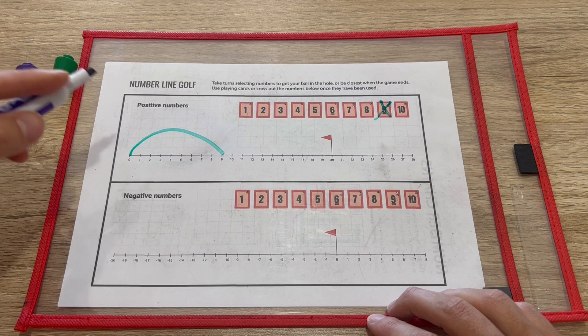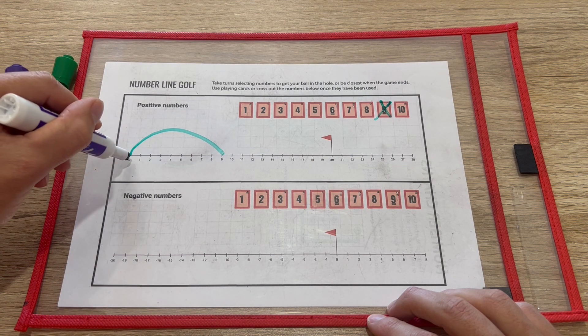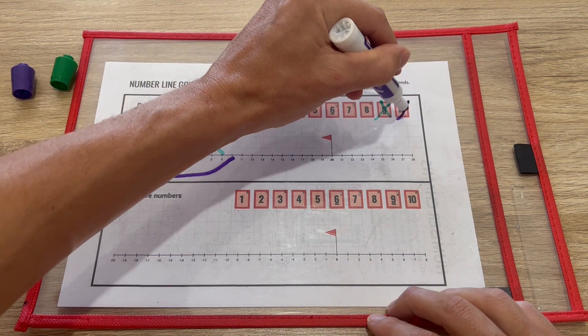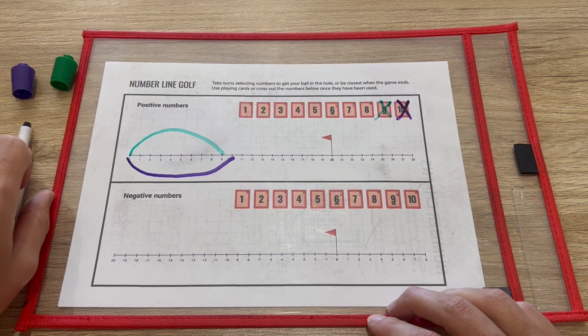And then purple would have their shot. Now remember, if the game is in the draw, the person who picked a 10 loses the game. So there's some incentive not to pick the 10.